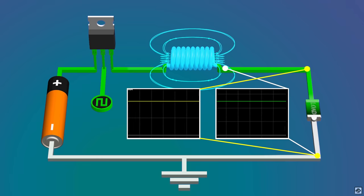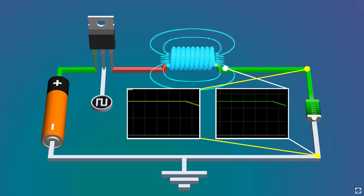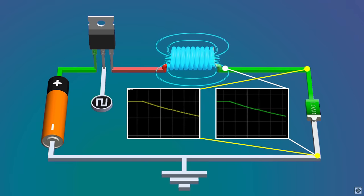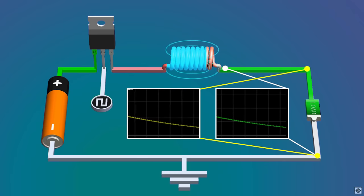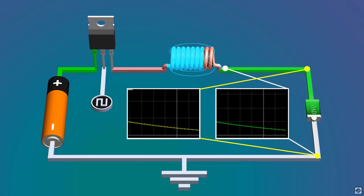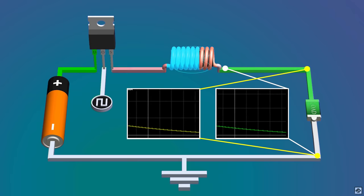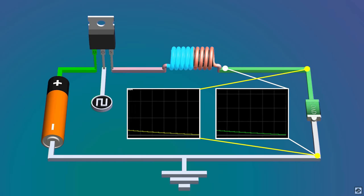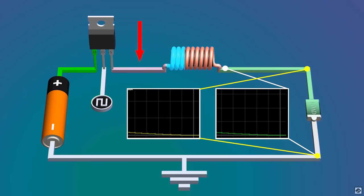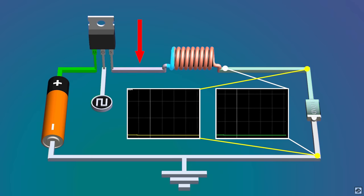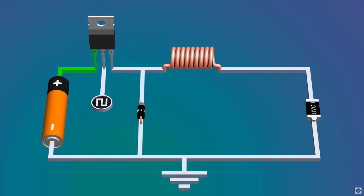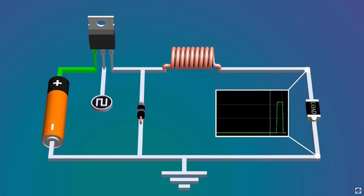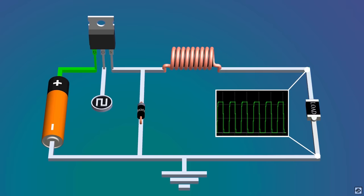Now if you open the switch, there is no source to supply current and thus current starts falling. But the current through the inductor cannot change instantly, so the inductor now acts as a battery supplying current. It slowly runs out of energy. As one end is open, electrons accumulate there creating a high negative voltage, which may damage components. Thus we add a low voltage drop Schottky diode to create a path for electrons.